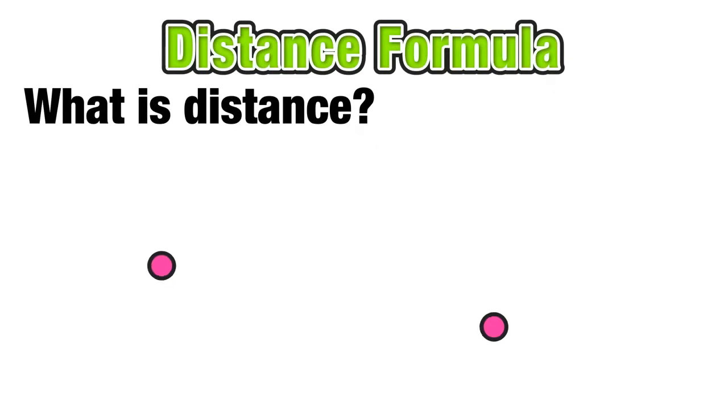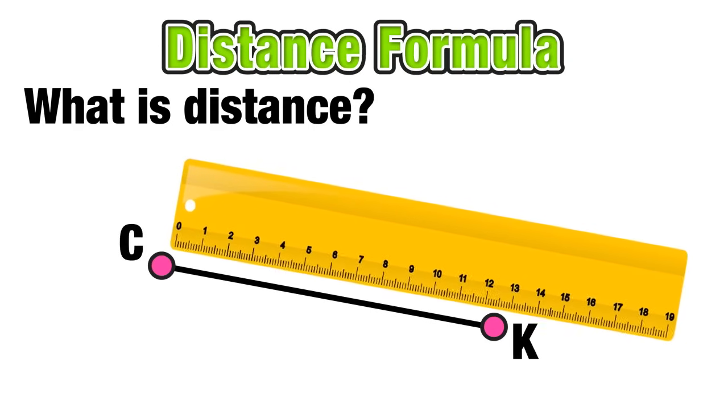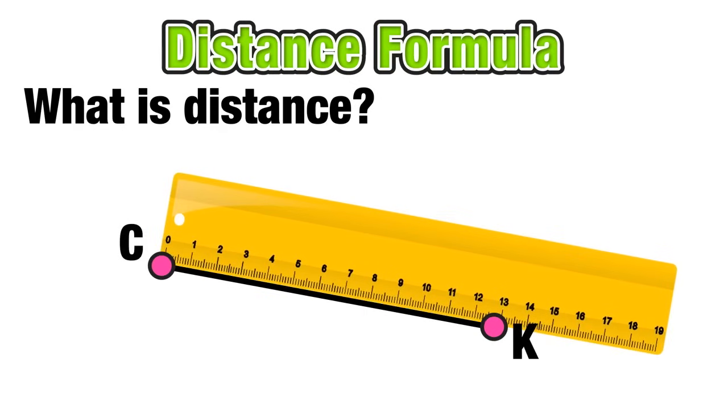So for this lesson, we're concerned with finding the distance between two endpoints connected by a line segment, in this case line segment CK. If we measured this line with a ruler, we could say that CK has a length of 13 centimeters.